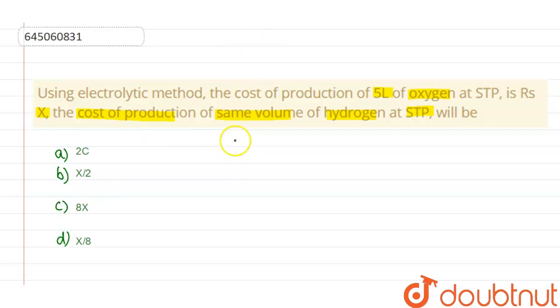So let's discuss this question. For the production of oxygen and hydrogen, we will be needing water. So first I will be writing the oxidation half cell reaction, which will be equal to 2H2O will give us O2 plus 4 electrons plus 4H positive. So this is the first reaction. And here oxygen is produced.